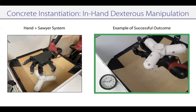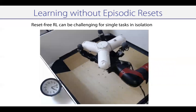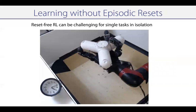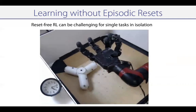We instantiated this concretely in the context of dexterous manipulation problems. We considered a 22 degree-of-freedom system with a 16 degree-of-freedom hand and a 6 degree-of-freedom arm. The goal in the first task is to do in-hand manipulation — take a three-pronged object and rotate it to a particular angle in the palm of the hand, with a successful outcome shown on the right. When we train it reset-free in the single-task setting, it can be quite challenging. Initially we see exploration in the palm, but the object quickly falls out onto the floor, and it becomes hard to resume training.